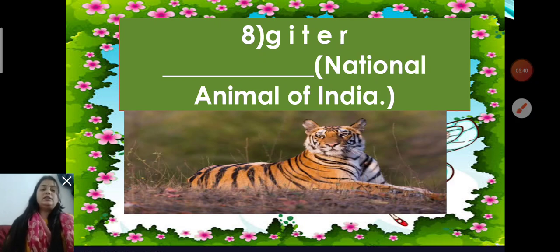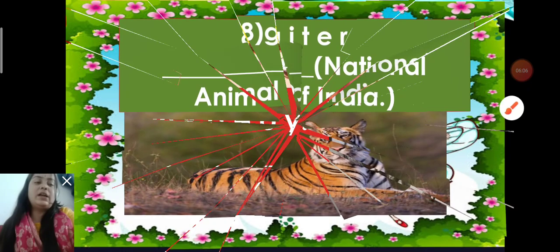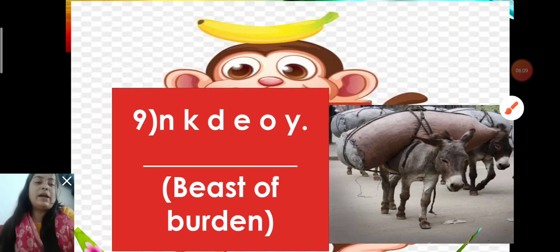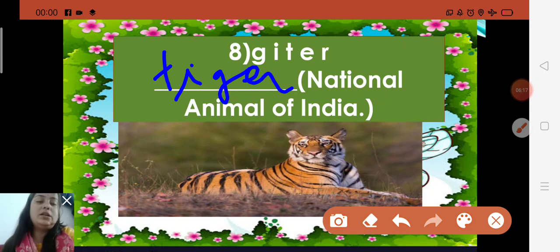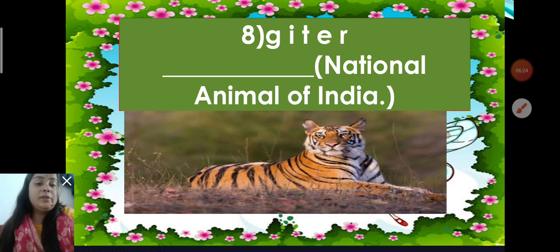Now, move to the next, children. This is the eighth number. First, identify the picture and then clues. National animal of India. And that already I have spoken. Yes, this is the picture of tiger. It is the national animal of India. It is very powerful animal. So, children, they wrote, it is bigger wild animal. It is carnivorous. It means it eats flesh of other animals. So, what will you write here? Tiger. There you will write tiger. Spelling T-I-G-E-R. Tiger. It is the national animal of India.